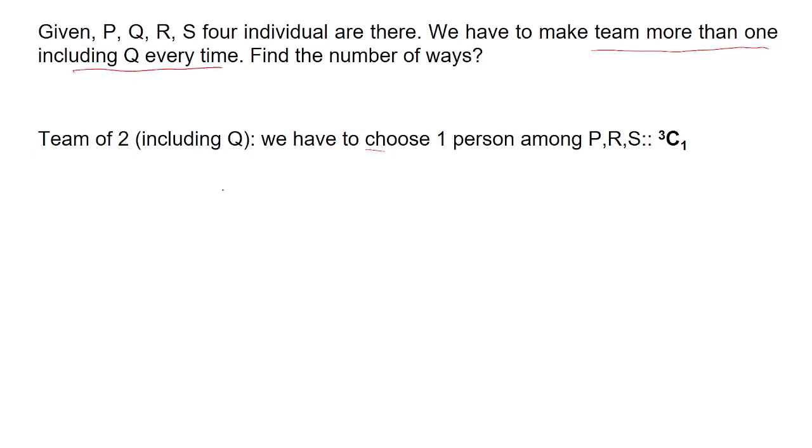First condition: team size must be at least two. We have to include Q every time, so Q will be there and one more person can be chosen among P, R, S. So the number of ways will be 3C1, and it will be equal to 3 factorial divided by 2 factorial multiplied by 1 factorial, which equals 3.